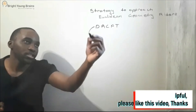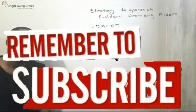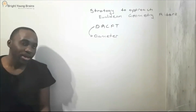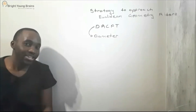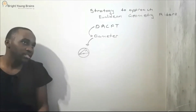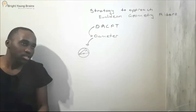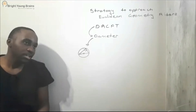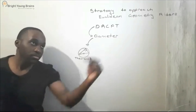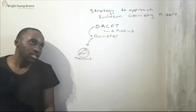Firstly, D refers to diameter. Whenever you have a Euclidean geometry question, whatever your sketch looks like, you want to look out for a diameter first. The moment you look out for a diameter, you will be able to remember this theorem: an angle subtended by the diameter of a circle is equal to 90 degrees. This is Theorem 3.